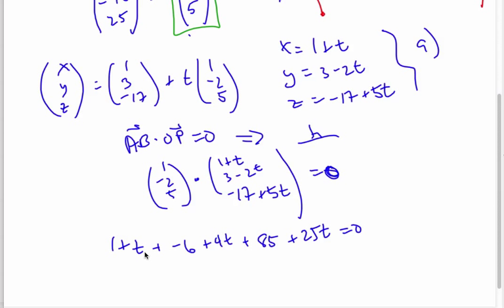Then I solve for T, I get 1T, 5T, so 30T, 1 minus 6 is minus 5, plus 85 is plus 80, equals 0. And so then 30T equals negative 80.